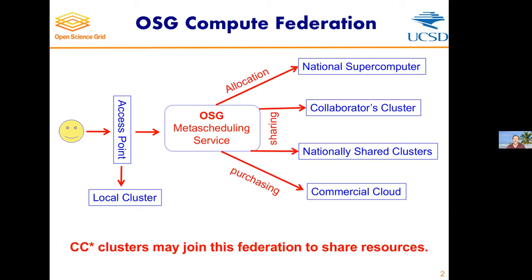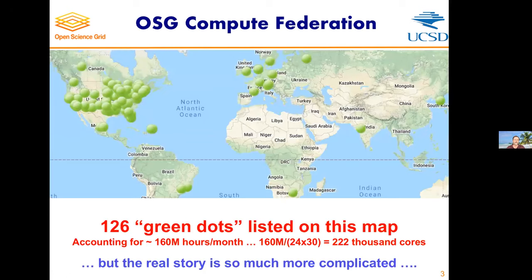In the compute federation, we are envisioning this picture which you've already seen earlier today, where we have a researcher who sits at an access point and can decide based on their JDL job description whether they want to run on the local cluster or anywhere on various types of different clusters, including sharing. This talk is about how you share — CC star clusters may join this federation to share resources.